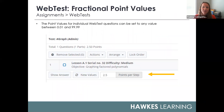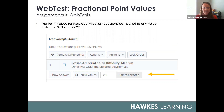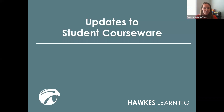We've also added the ability to select fractional point values for your questions as you're setting up your test. You may now select any value between 0.01 and 99.9 points for each individual question.